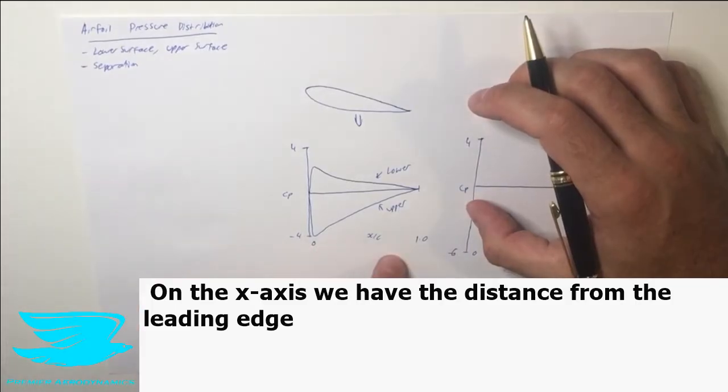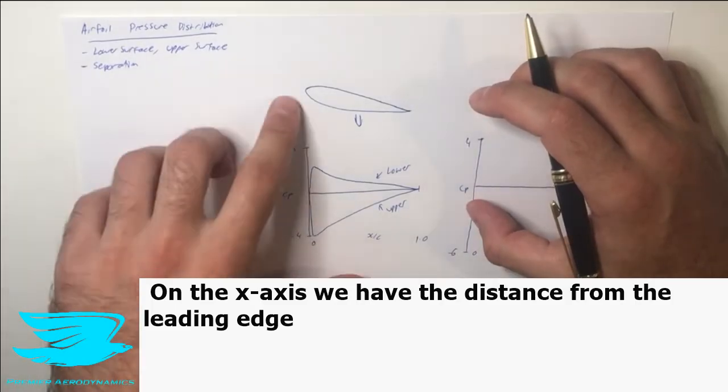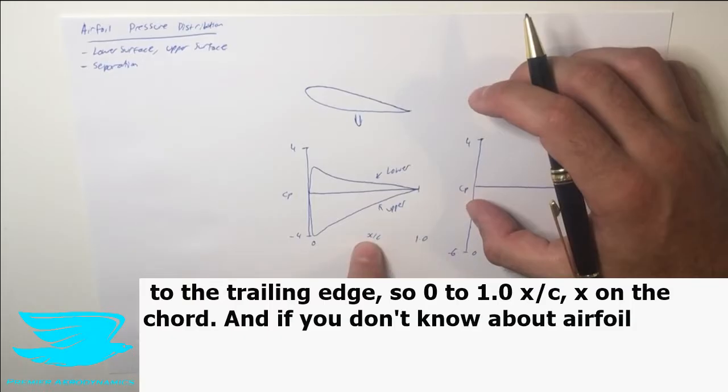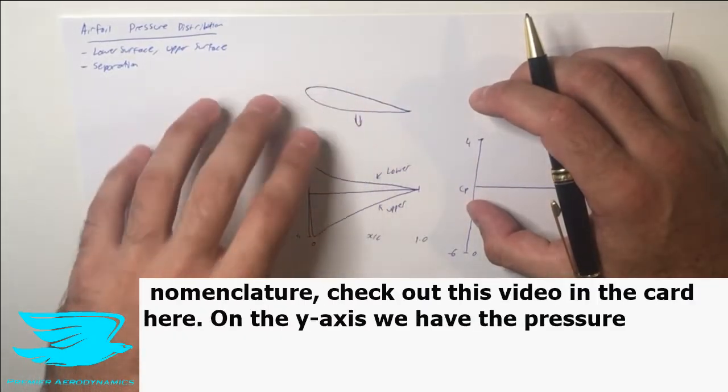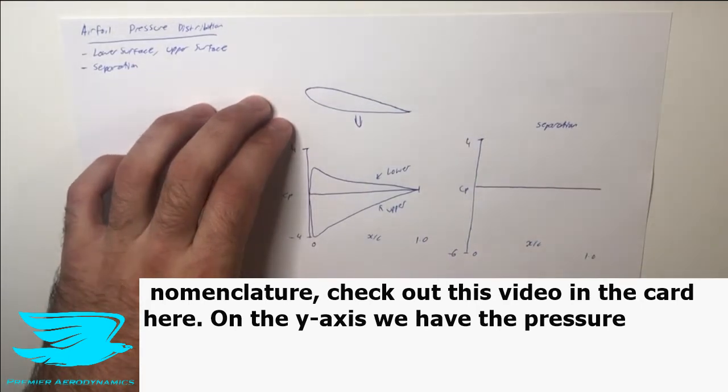On the x-axis we have the distance from the leading edge to the trailing edge, so 0 to 1.0, x on c, x on chord. If you don't know about airfoil nomenclature, check out this video here in the card.